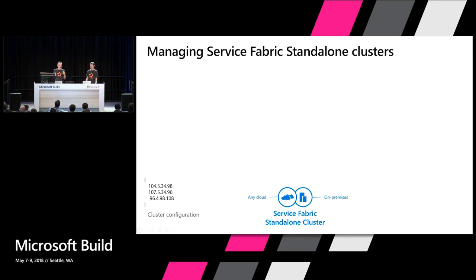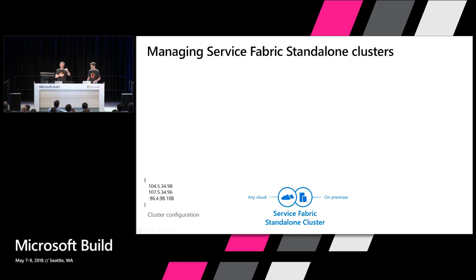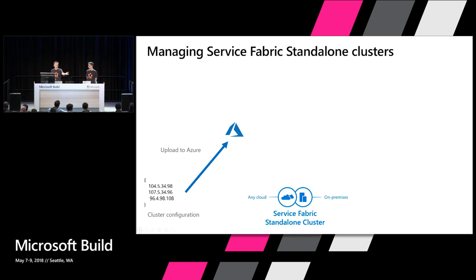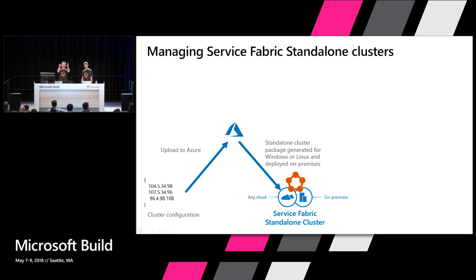A lot of people ask us to make it easier to manage on-premise clusters and configure local clusters without digging around for packages. What you'll see launching in the next few weeks is the ability to describe a JSON manifest — think of it like an ARM template — listing machines by IP address along with configuration like certificates. You upload this to Azure, we look at the manifest and deployment type (Linux or Windows), download all relevant packages, and configure your local cluster. You can stand up a local cluster by simply uploading a definition with a single PowerShell command.